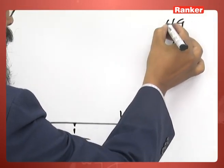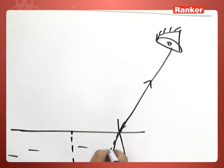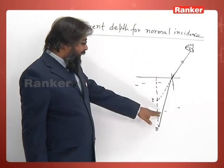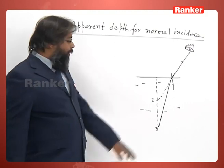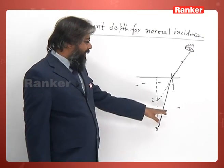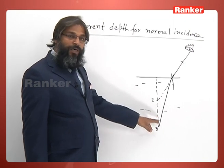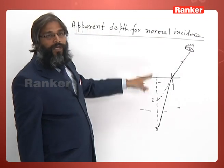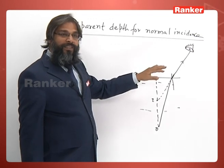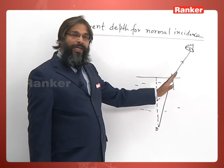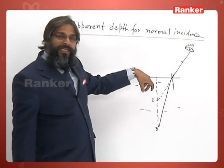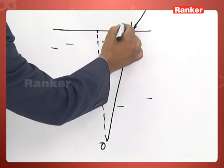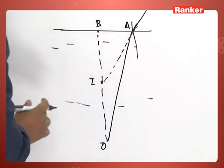We have to understand the exaggeration in this diagram. The angle is very small — of the order of one degree or less. So this is just exaggeration: if the angle is of the order of one degree, the eye is actually placed nearly directly above, representing normal incidence. I can't draw one degree so I have to exaggerate my diagram. Don't think you are seeing obliquely — you are seeing the object normally.